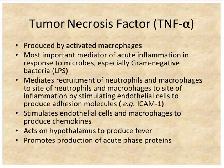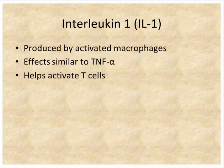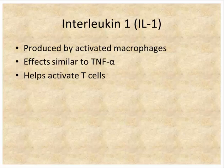TNF-alpha also stimulates endothelial cells to produce chemokines — chemotactic cytokines. It affects the hypothalamus and is a pyrogen, causing fever, and promotes the production of acute phase proteins. Interleukin-1 is another inflammatory cytokine produced by macrophages with properties very similar to TNF-alpha — it is also a pyrogen that induces fever. These are among the three main inflammatory cytokines: TNF-alpha, IL-1, and IL-6.